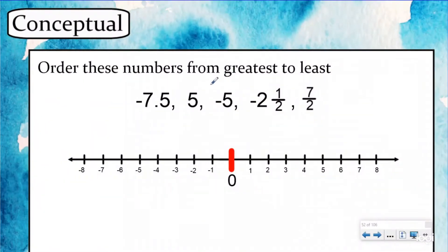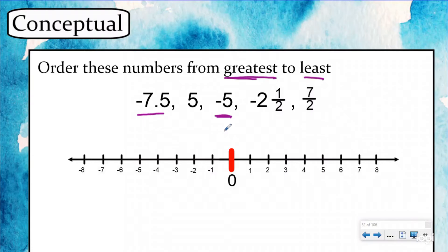Our next question says order these numbers from greatest to least, and we have all sorts of rational numbers — whole numbers, positives, negatives, and fractions. This is why it's so important to understand our key thought, because when you look at negative seven and a half, or negative seven and five tenths, and then negative five, you might think that negative 7.5 is bigger than negative five — because if they were positive, that would be true.